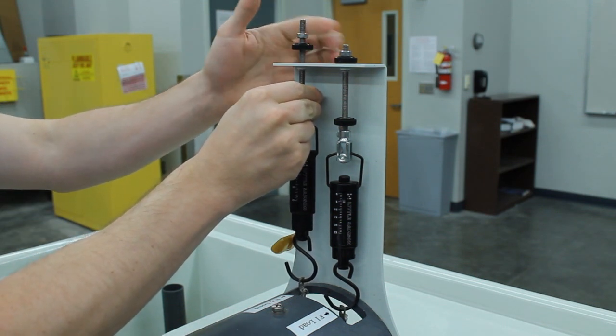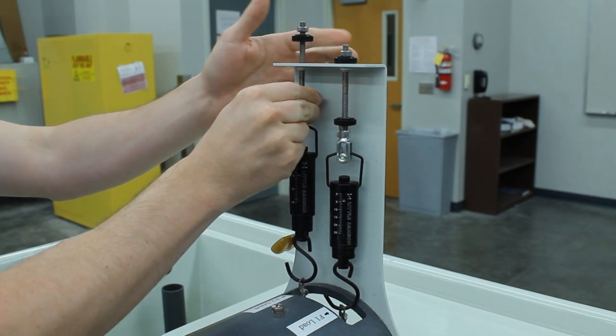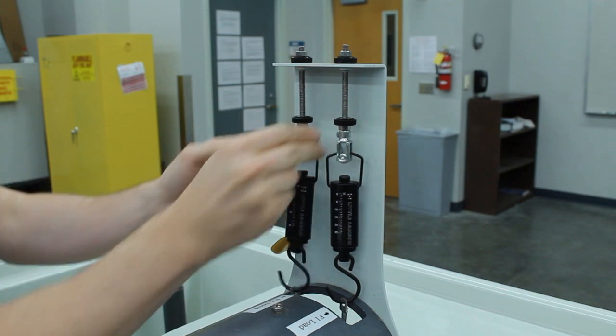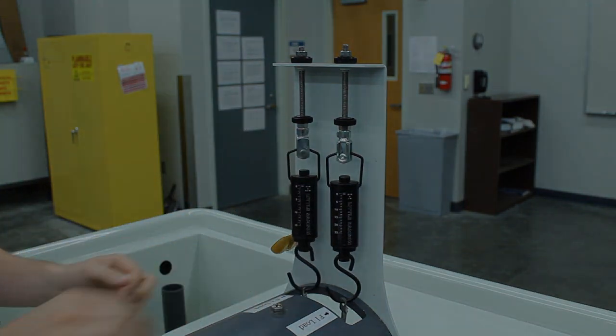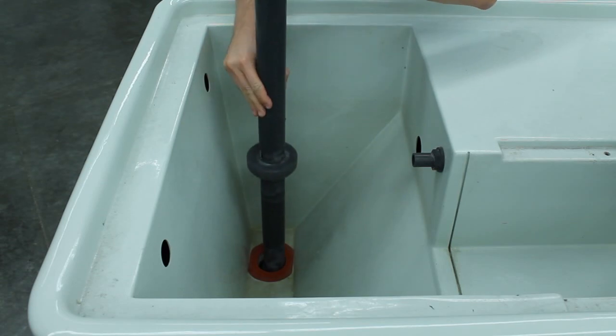Adjust the screws at the top of the spring balances until the cord hangs loosely from the hooks. Note any offsets in the force readings. Remove the drain column from the drain and set it aside.